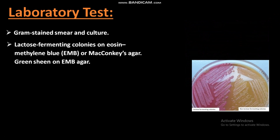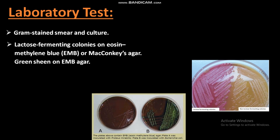Other procedures to identify E. coli bacteria include culture growth. E. coli bacteria ferment lactose on eosin methylene blue (EMB) agar and produce pink color colonies, confirming they are E. coli bacteria. The other culture growth of E. coli bacteria is on MacConkey agar, where they produce a green sheen on the MacConkey agar.